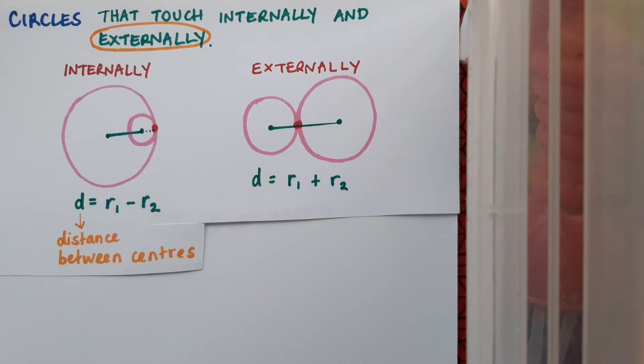You may remember from our previous video that we looked at this diagram representing internally touching circles and this diagram representing externally touching circles. The formula that we'll be looking at now when we're dealing with externally touching circles is d equals r1 plus r2. Again, d is the distance between the centres and r1 and r2 are the radii of the two circles.